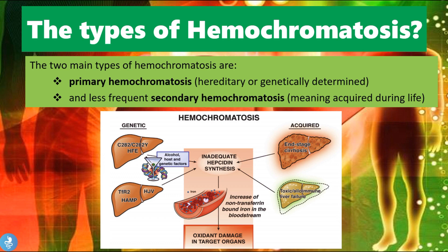The secondary form of hemochromatosis is acquired during life. This could mean end-stage liver disease due to hepatitis, liver cancer, parasites in the liver, or chronic alcoholism. Other causes of secondary hemochromatosis include blood transfusions and excess dietary intake of iron, which we'll take a closer look at.